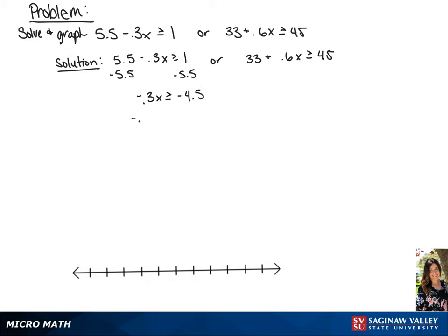Next, we're going to divide each side by negative 3. And since we're dividing by a negative number, this means we're going to flip the sign. This is going to give us our first solution of x is less than or equal to 15.